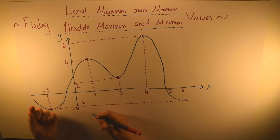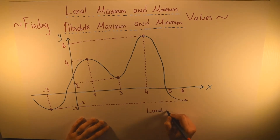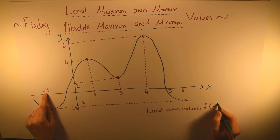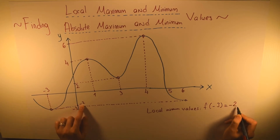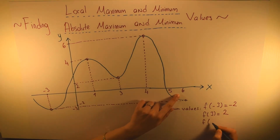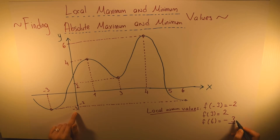There is only one absolute maximum or minimum, but there can be more than one local maximum or minimum. Our local minimum values are: when x equals minus 3, y equals minus 2; when x equals 3, y equals 2; and when x equals 6, y equals minus 3. These are our local minimum values. The lowest one is minus 3, so minus 3 is our absolute minimum value. We have three local minimum values but only one absolute minimum value.